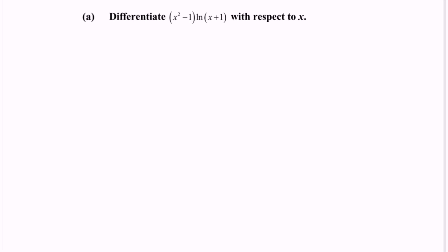Differentiate (x squared minus 1) multiplied with ln(x plus 1) with respect to x. As we can see, the relationship is multiplication, so we have to apply the product rule. The formula for the product rule is y prime equals v multiplied with u prime plus u multiplied with v prime.